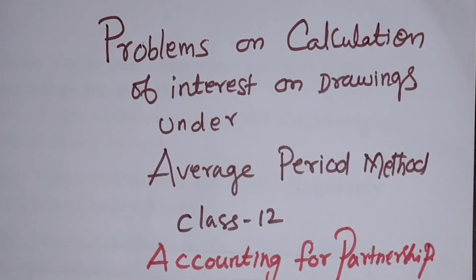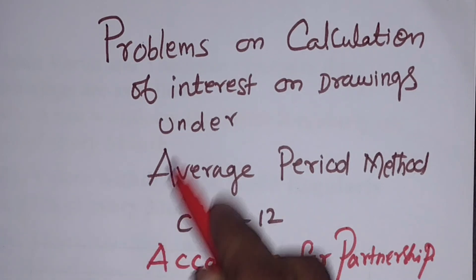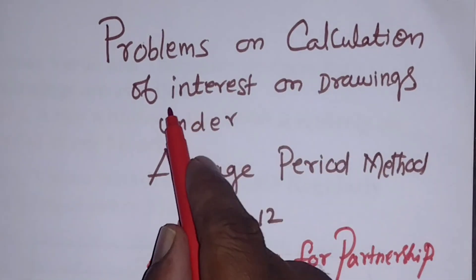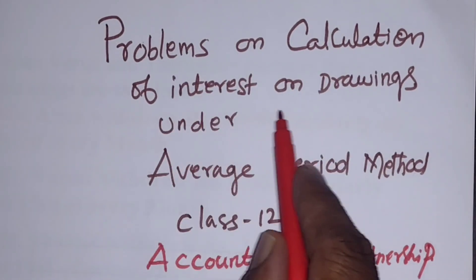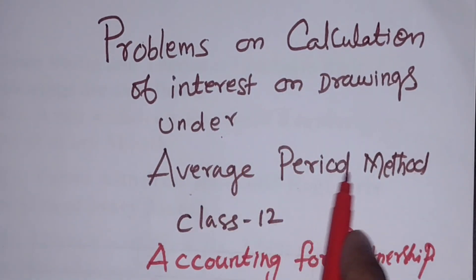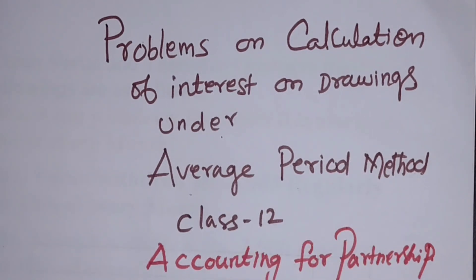Welcome to Shivakumar classes. Today the topic we are going to discuss is problems on calculation of interest on drawings under the average period method for class 12. The chapter is accounting for partnership.